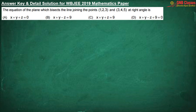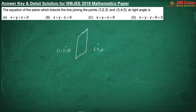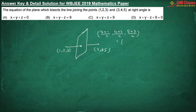The equation of the plane which bisects the line joining the points (1, 2, 3) and (3, 4, 5) at right angles. The midpoint of these two points is (2, 3, 4).